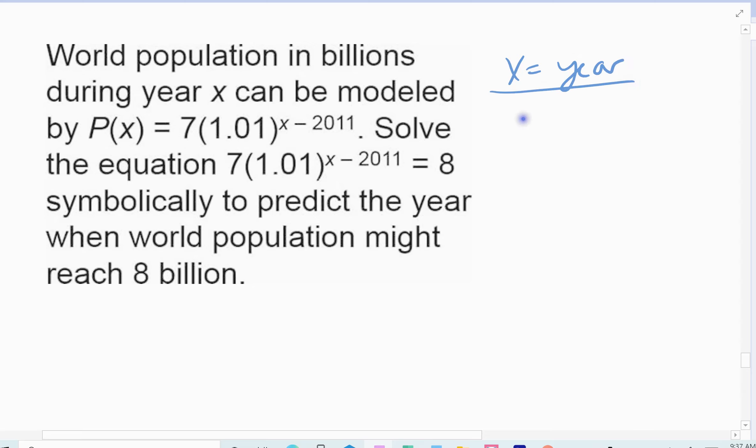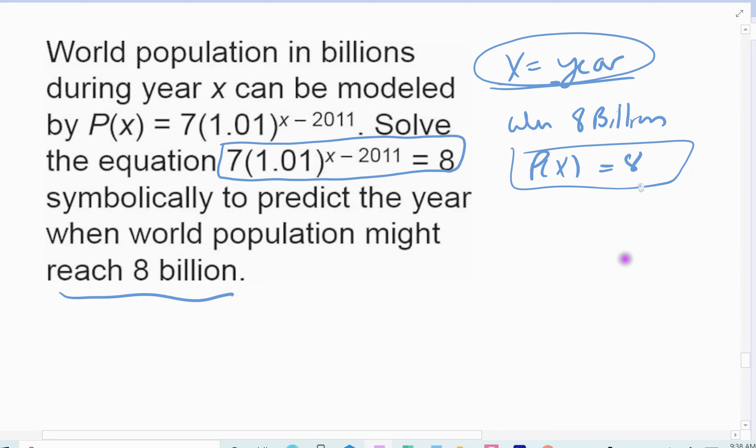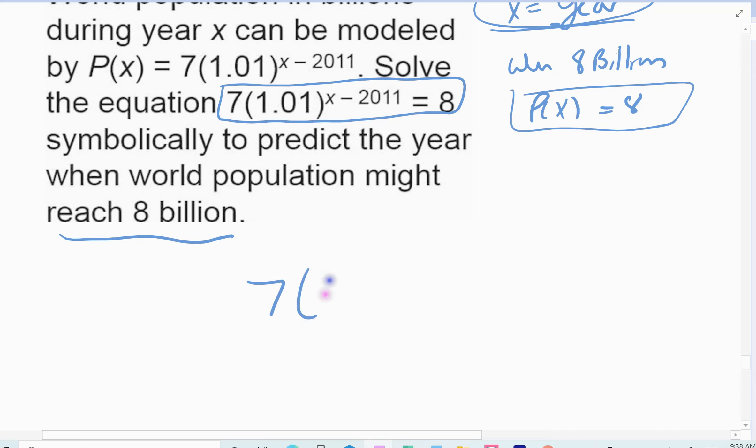So x is the year. We want to know when we reach 8 billion. So they've taken P(x). They actually set it up for you. So it's kind of worded weird. But this is a problem I did take from the book because I thought it was worded weird. So they've already set it up. This is what they're asking for. In what year will the population reach 8 billion? So they've already kind of done the setup for you. So 7 times 1.01 raised to the x minus 2011 equals 8. And then solve for your x.